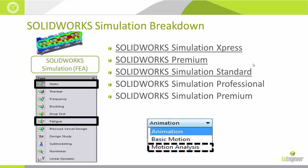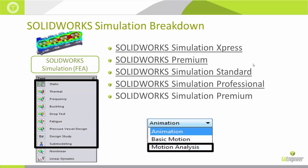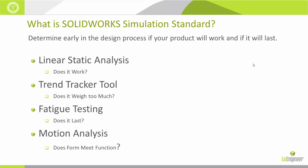Simulation Standard only gives us basic motion — we don't get event-based motion. As we move into Sim Professional we get full motion plus thermal and frequency study types. Sim Premium adds time-dependent analysis. Today we're focusing on Sim Standard, sitting in the middle of the product lineup.